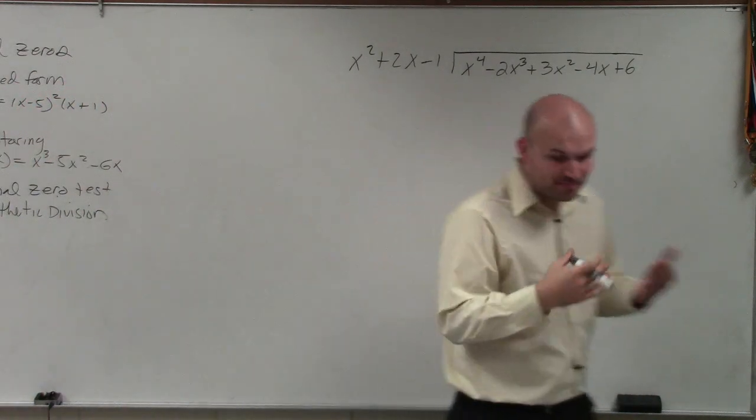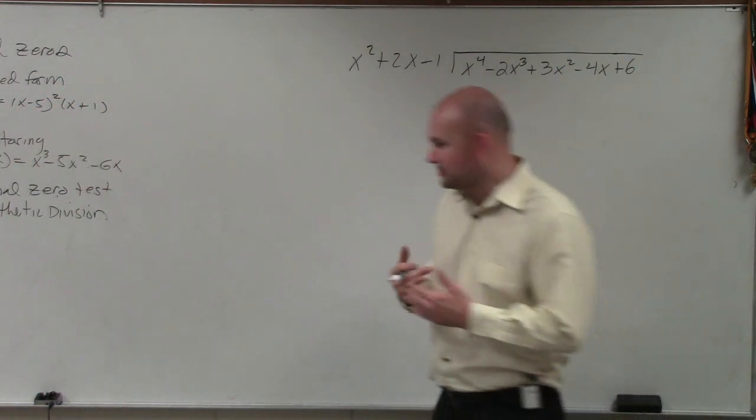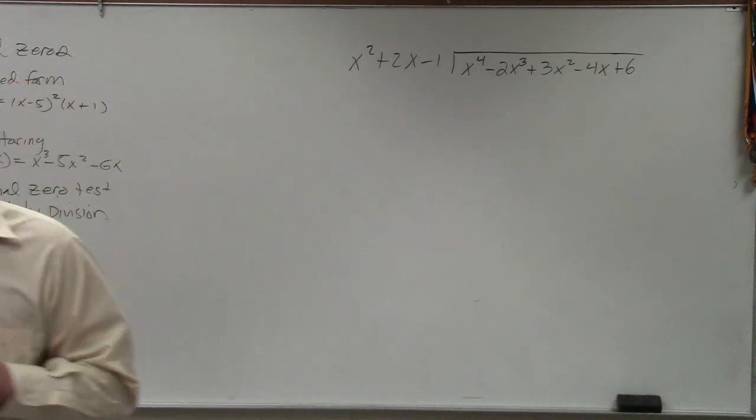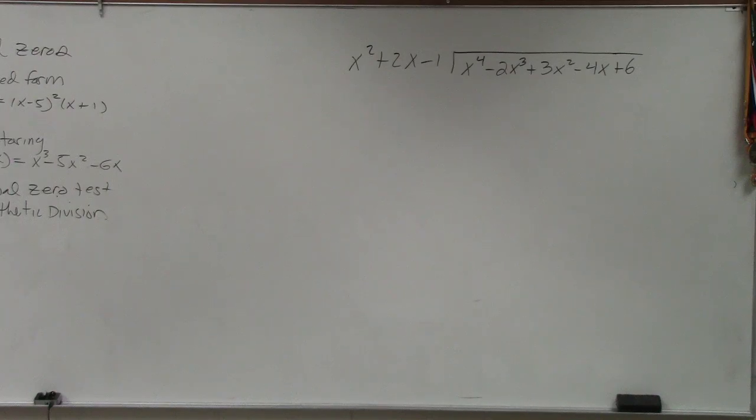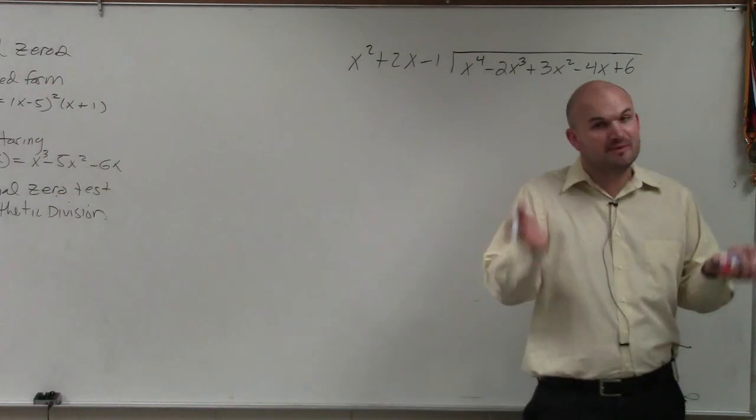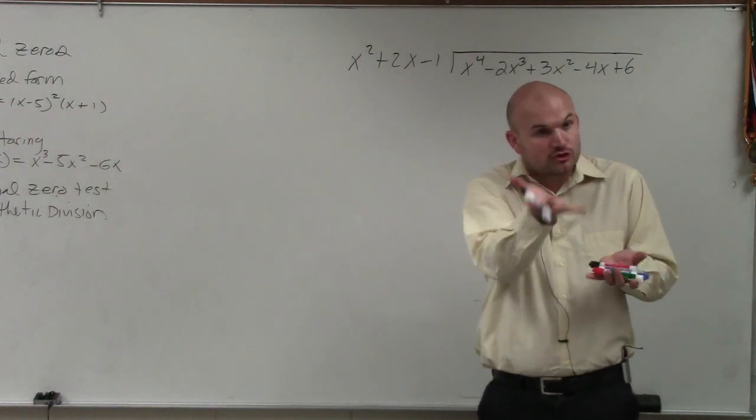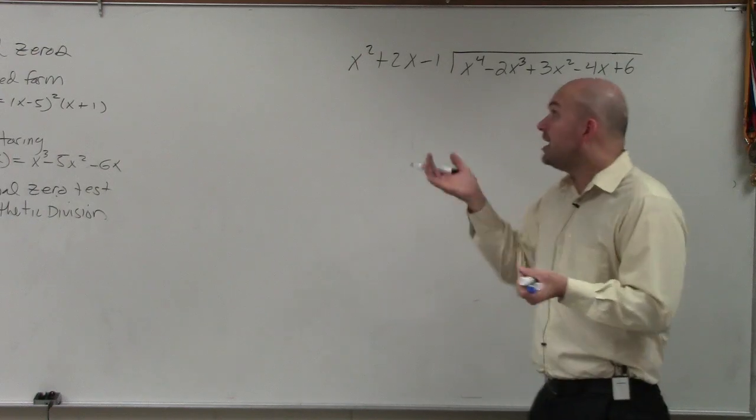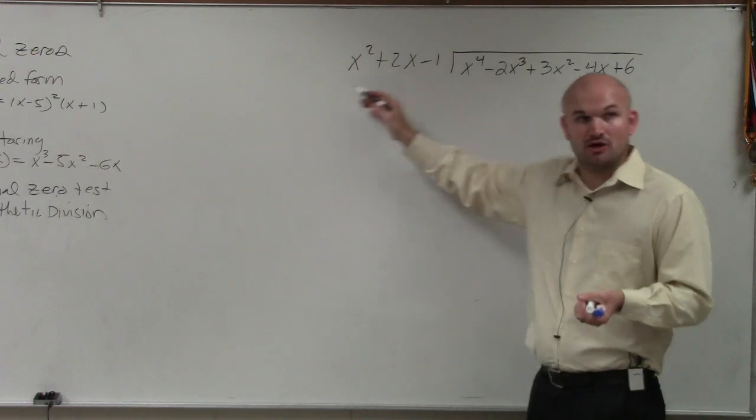Now, the basic thing again guys, is the process. The reason why I showed you that first one is because the process and everything we're doing is exactly the same. We're not changing anything as far as the process. We still have a divisor, we still have a dividend, and we're still going to have a quotient. The only difference is, if you remember the last one, our divisor was one single term, correct? Now we have the sum of terms called a polynomial.